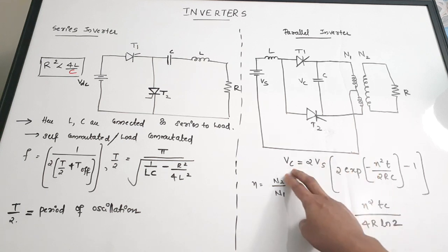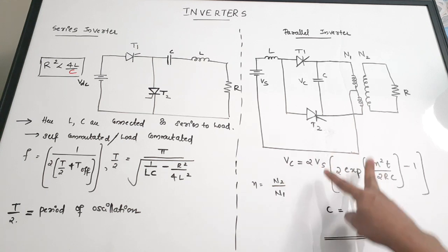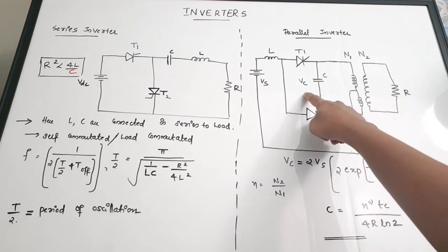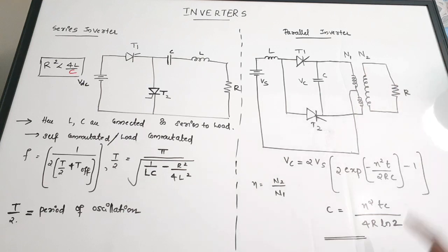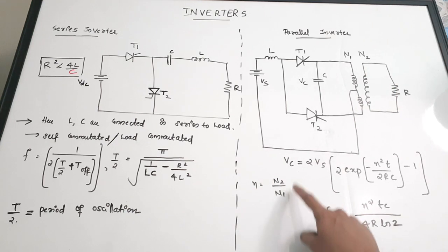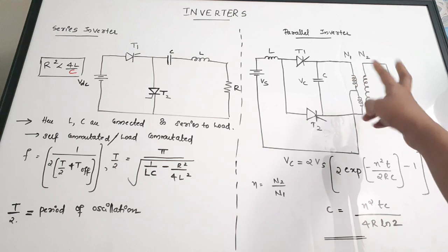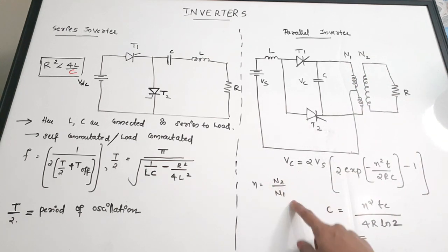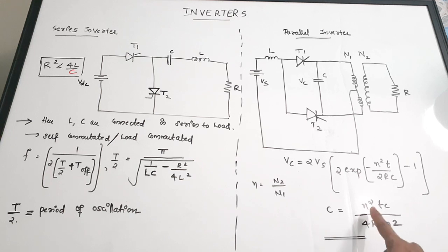Generally we take Vc = 2Vs only, ignoring the exponential term. N is the turns ratio of the transformer, that is N2/N1. The capacitance value is given by C = N²Tc / (4R ln 2).